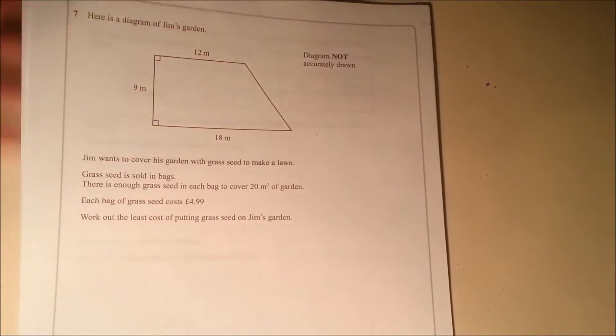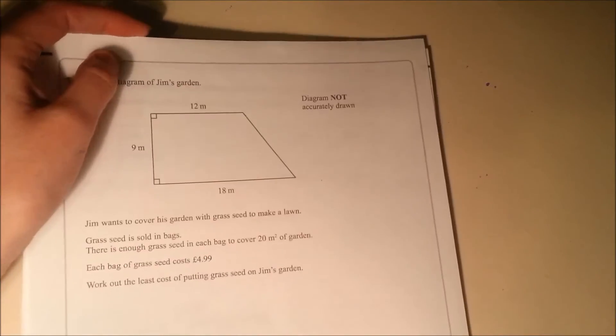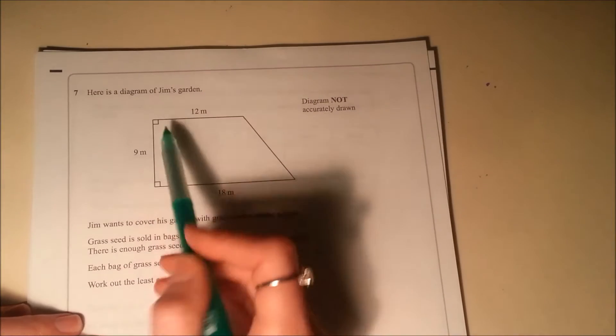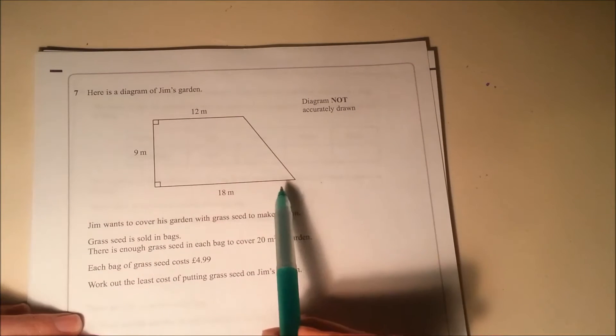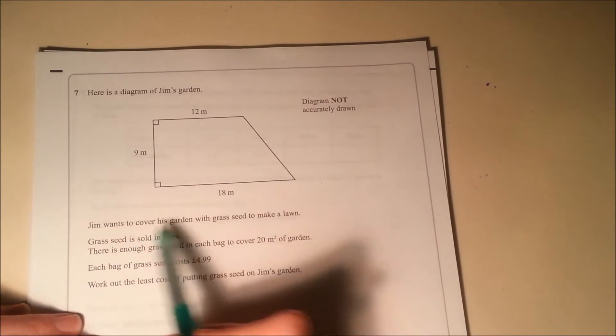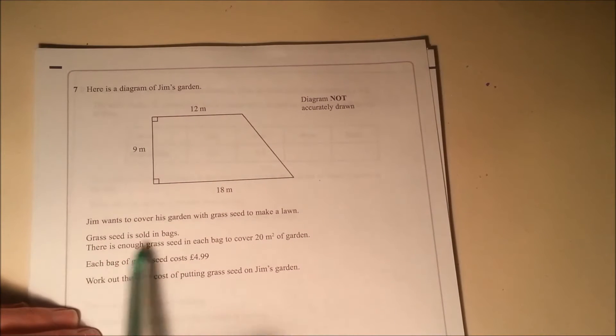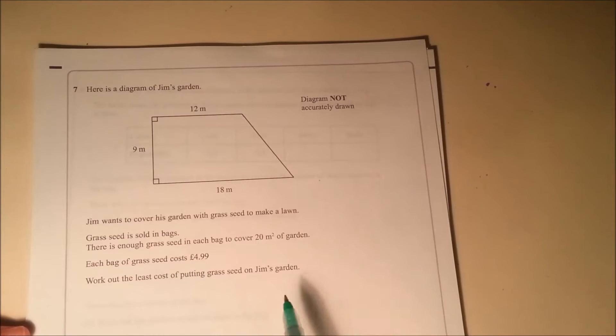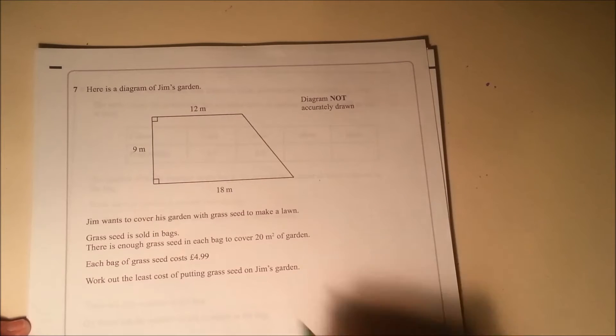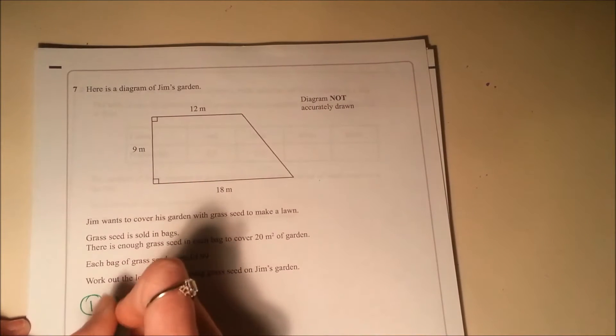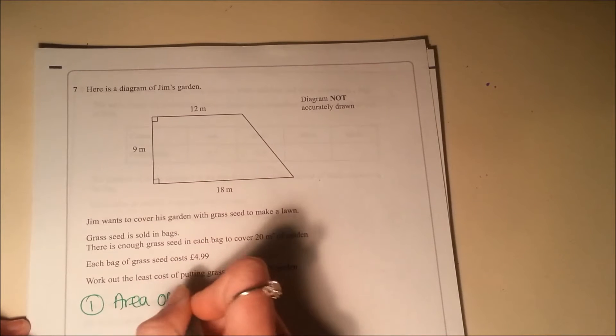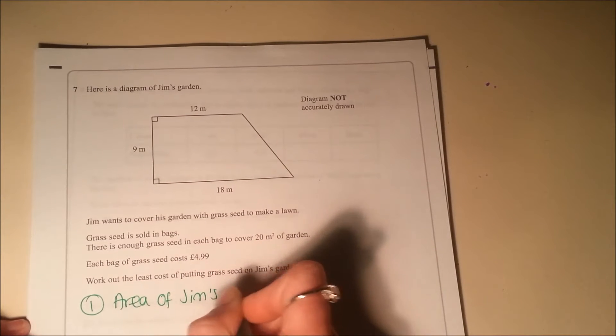So question seven, the standard problem solving question. We've got a garden shaped like a trapezium. Jim wants to cover his garden with grass seed to make a lawn. Grass seed is sold in bags. There's enough grass seed in each bag to cover 20 metres square of lawn. So we've got to put all this together and work out how much it will cost to seed Jim's garden. The first thing we need to do is work out the area of Jim's garden.